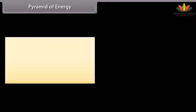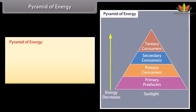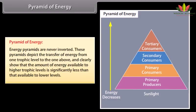Pyramid of Energy: the amount of energy available to higher trophic levels is significantly less than that available to lower levels.